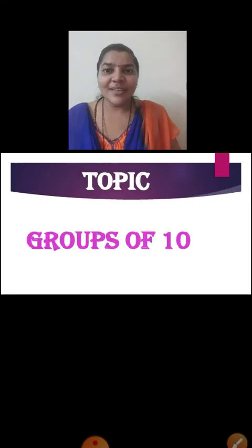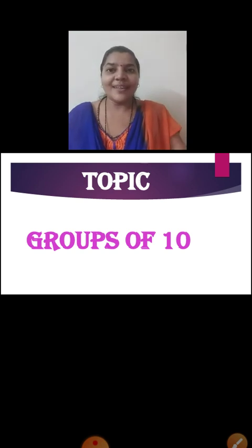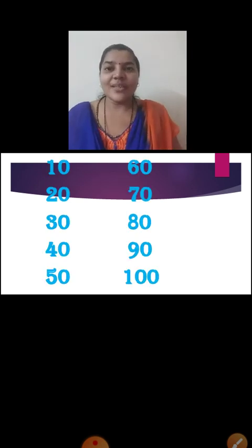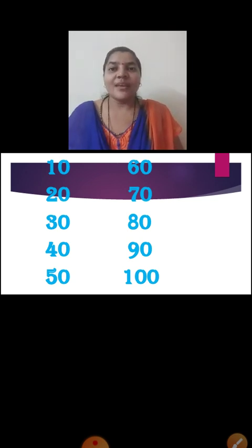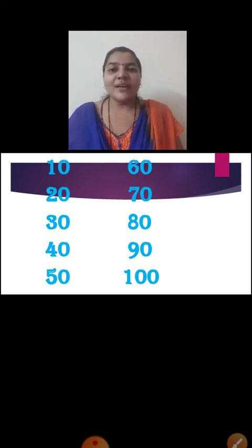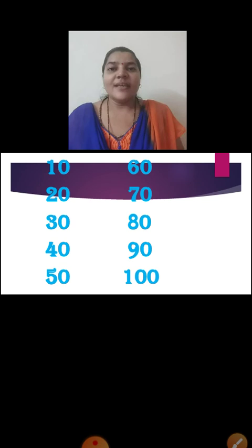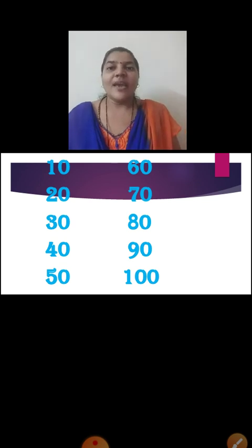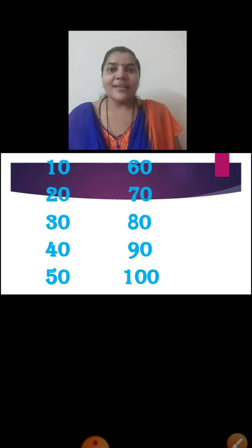So children, now we are going to learn groups of 10. Teacher will say and all will repeat after me. Say: 10, 20, 30, 40, 50, 60, 70, 80, 90, 100. This is called groups of 10.